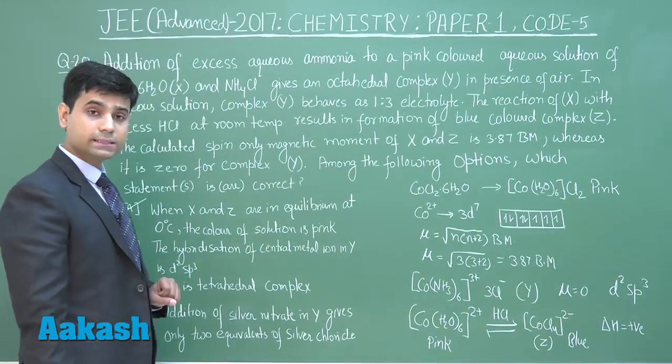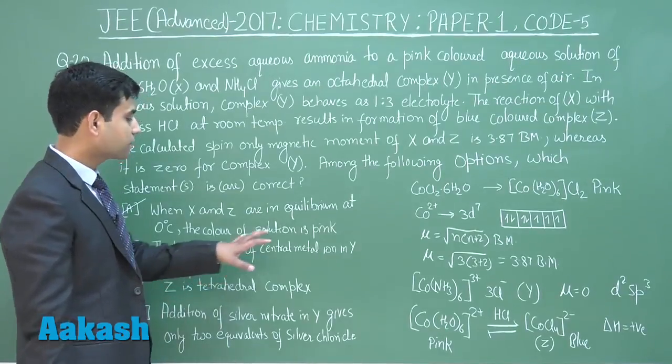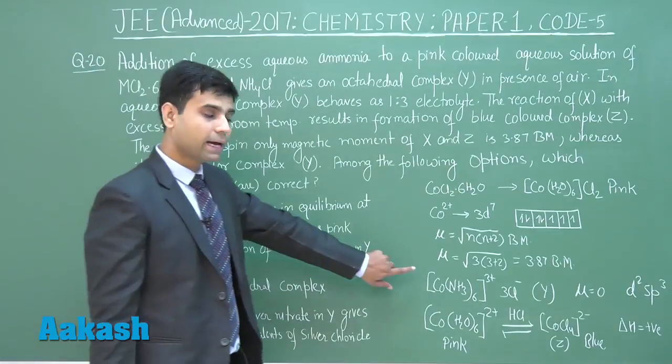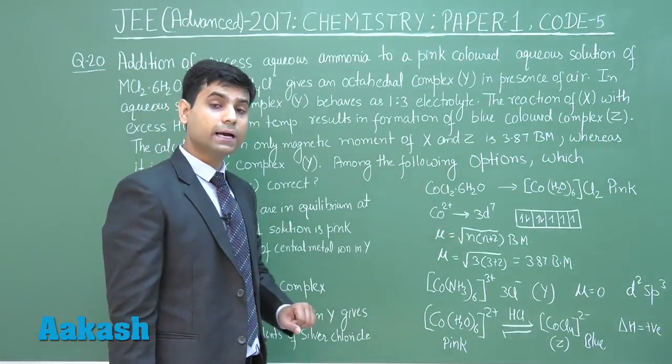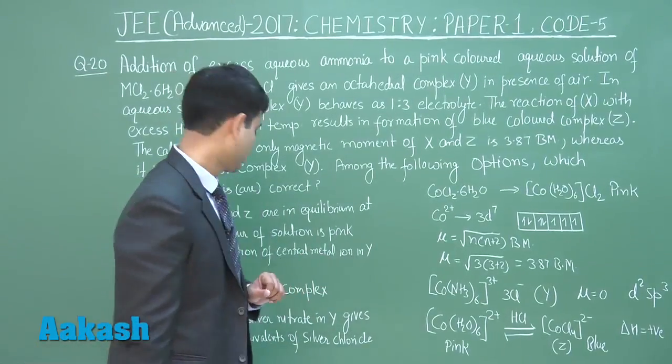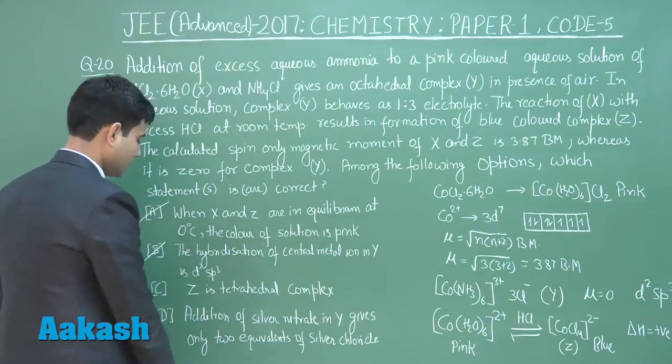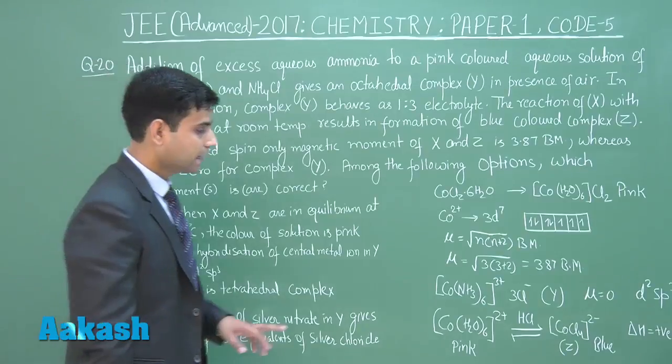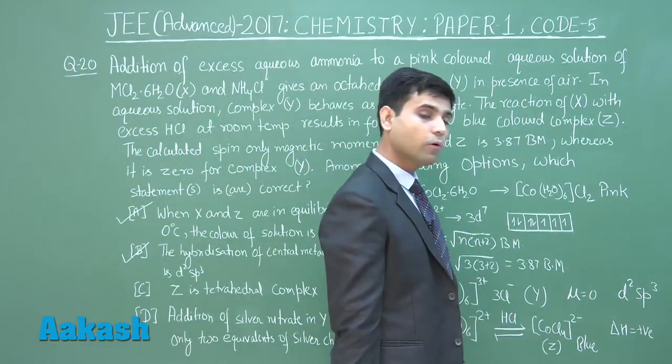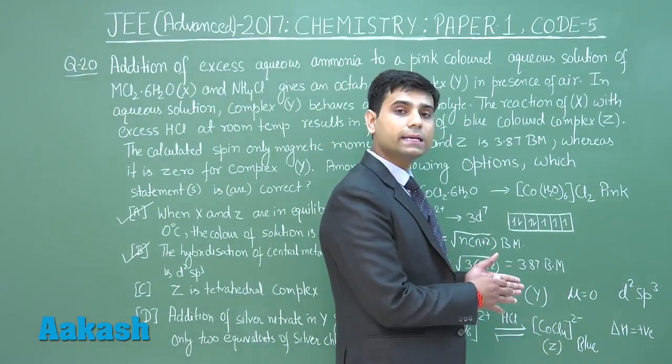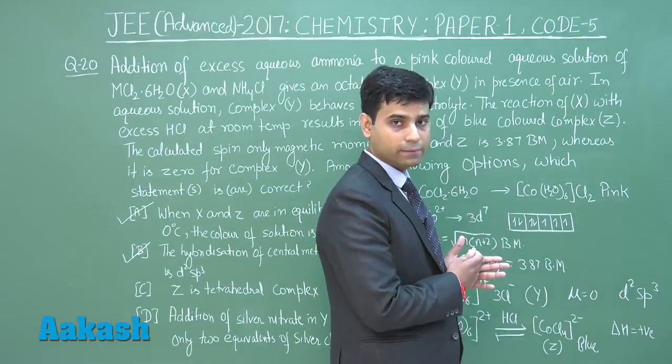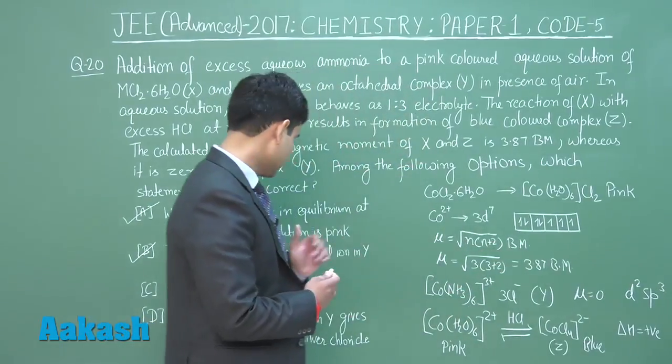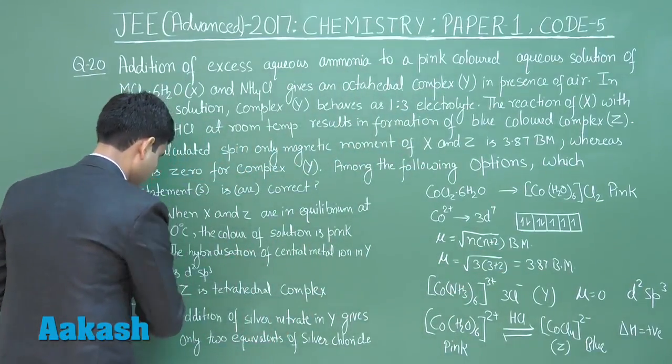Statement B: The hybridization of central metal ion in Y is d2sp3. This is Y, and the central metal ion's hybridization is d2sp3, so this is also correct. Statement C: Z is tetrahedral complex. Z is [CoCl4]2-, where chloride ion is a weak field ligand, so hybridization of cobalt 2+ will be sp3, that is the complex is tetrahedral. Correct.